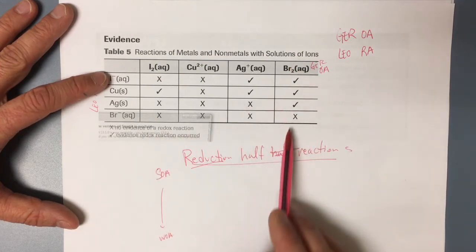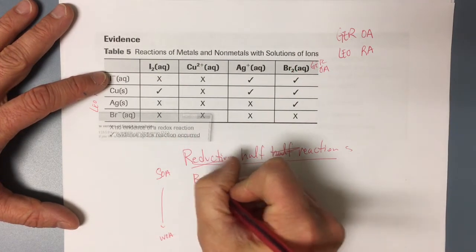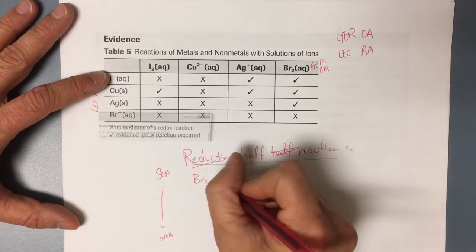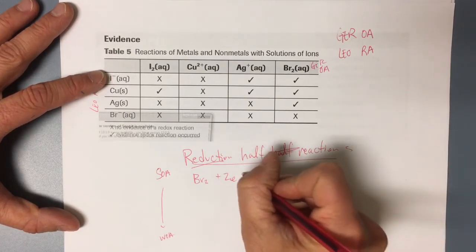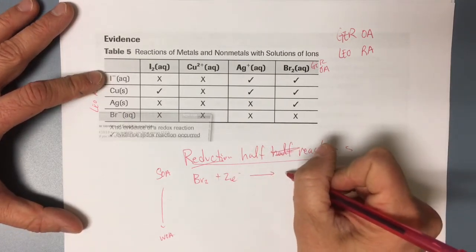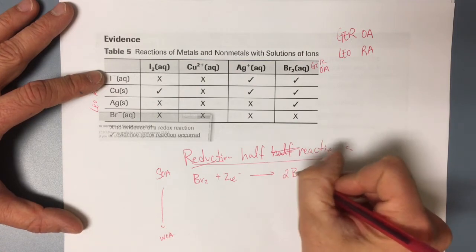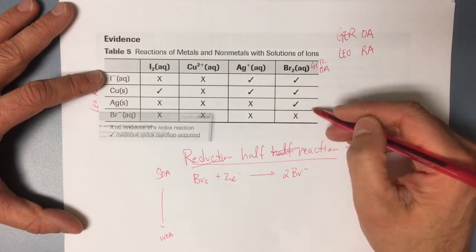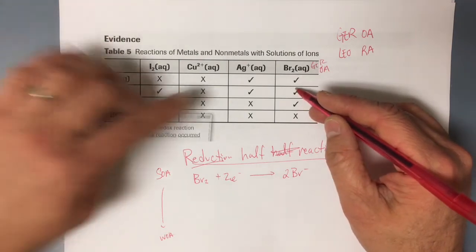So bromine is my strongest oxidizing agent. Bromine plus two electrons makes two bromides. That's my strongest oxidizing agent because it reacted with the most things.